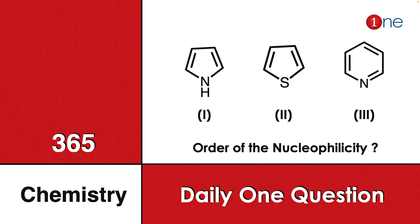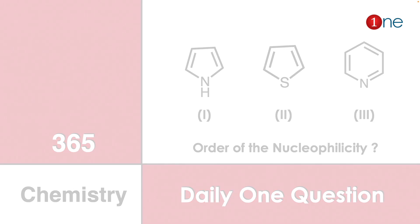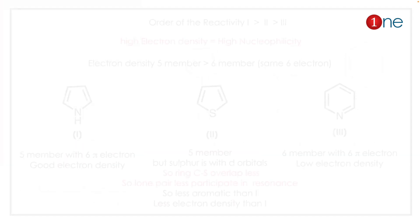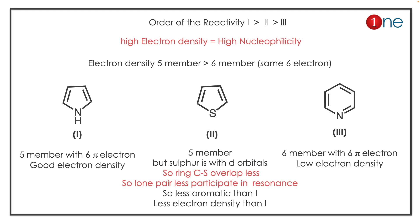The nucleophilicity order is 1, 2, and 3. The reason is high electron density — normally, the compound with high electron density has high nucleophilicity and high reactivity. You should know the fact that electron density determines nucleophilicity.